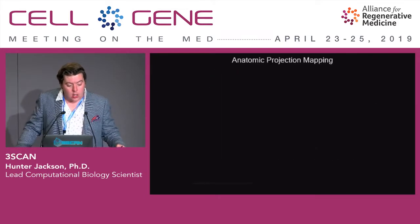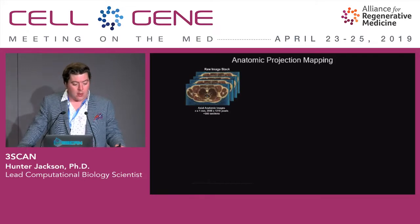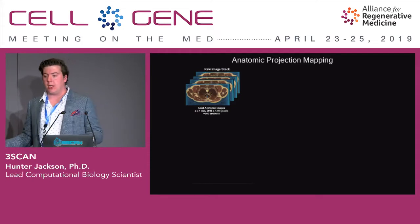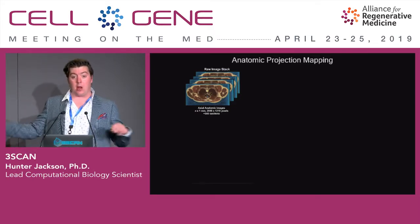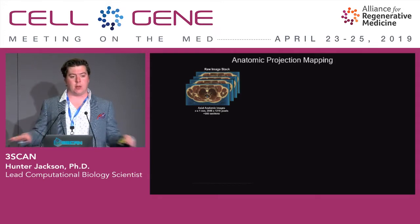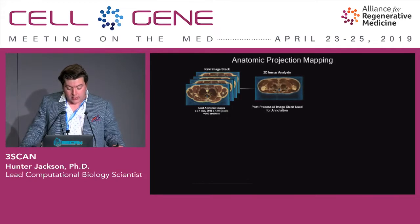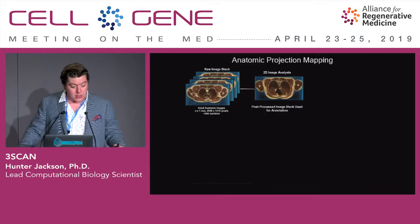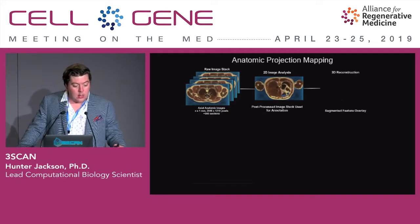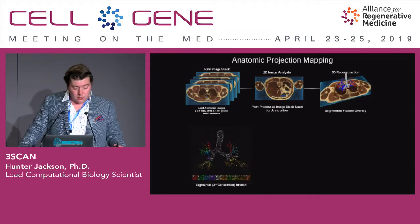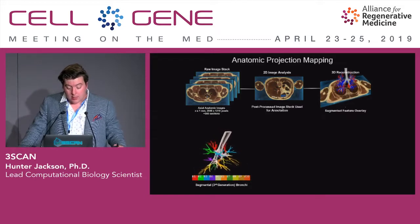This is an overview of how we do our anatomic projection mapping. This is a raw image stack from the Visible Human Project supported by the NIH; however, we applied our methods to demonstrate extensibility across different imagery modalities. From a bird's eye view, we take a series of axial anatomic images that are stitched together and used for annotation, with segmented features overlaid on the slides. On the left, you can see the bronchial tree from the trachea down to the segmental bronchi.